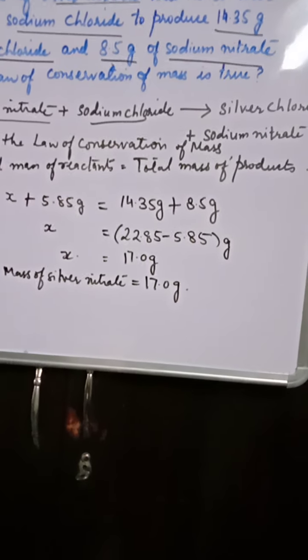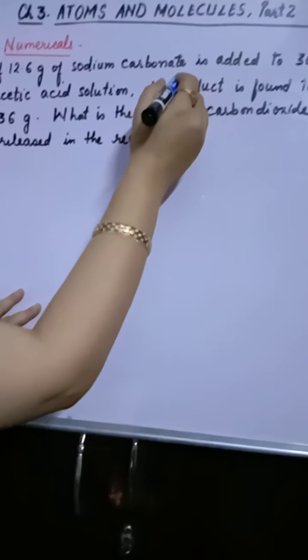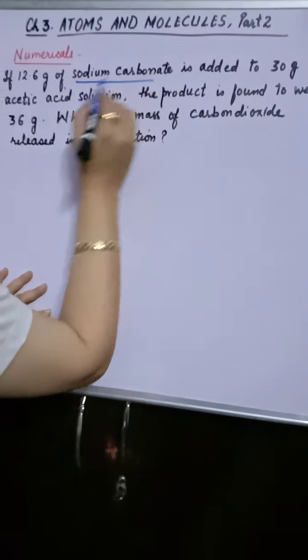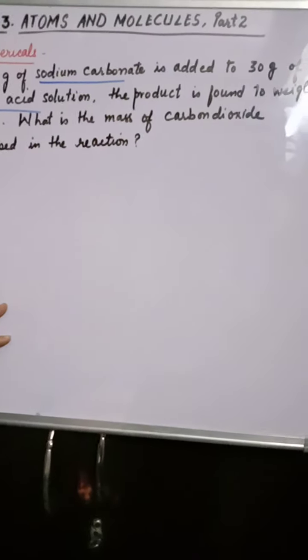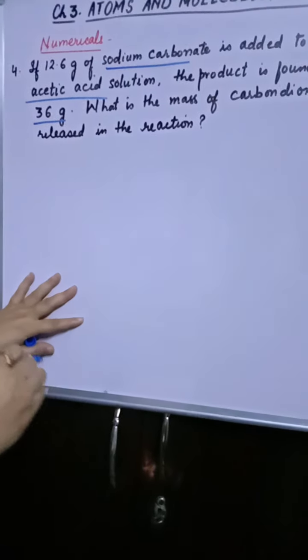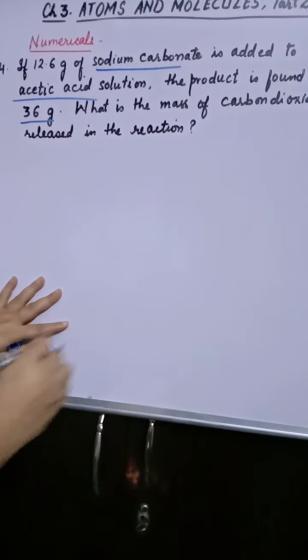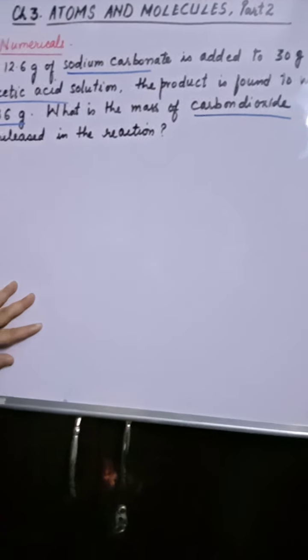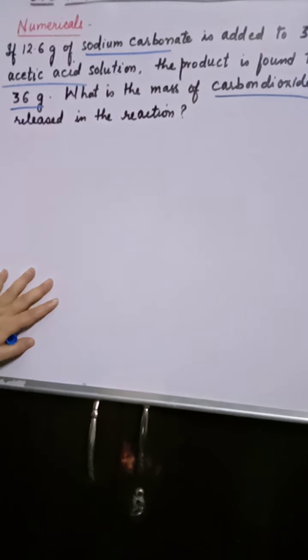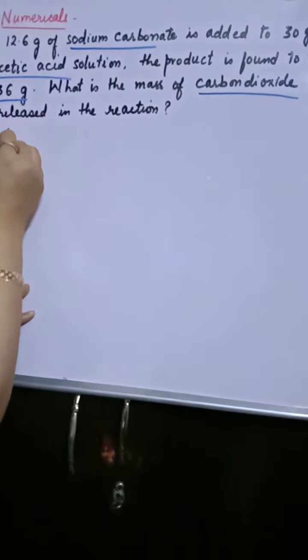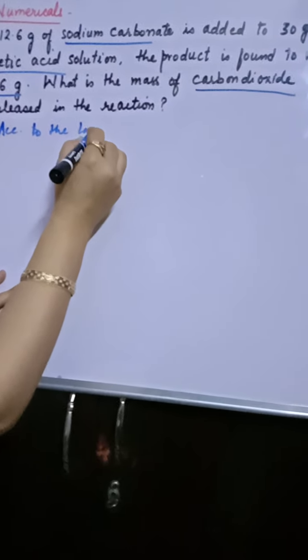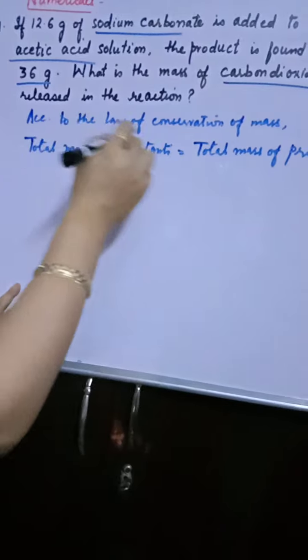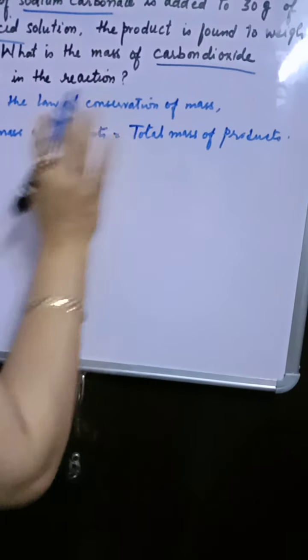Now next question. The question is 12.6 gram of sodium carbonate is added to 30 gram of acetic acid solution. So what we know sodium carbonate and acetic acid both are reactants here. The product is found to weigh 36 gram. What is the mass of carbon dioxide released in the reaction? It means that carbon dioxide is also a product. Because carbonate ke saath reaction ho raha hai, acetic acid ka, toh CO2 release hogi hi. According to the law of conservation of mass, same thing you will write, CO2. According to the law of conservation of mass, total mass of reactants is equal to total mass of products.